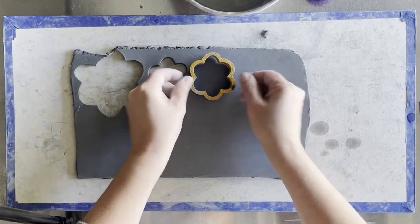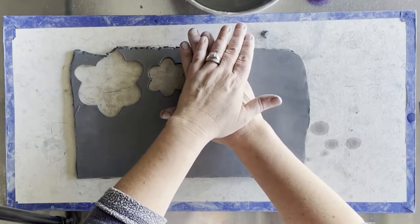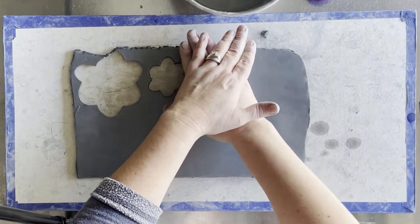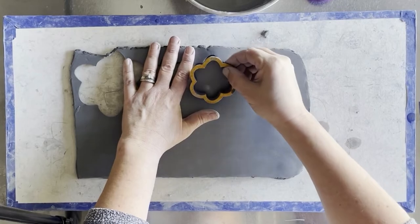We use the same method as we do for creating the Benz Bell by placing it on the clay and pressing firmly to cut out the shape of the flower.